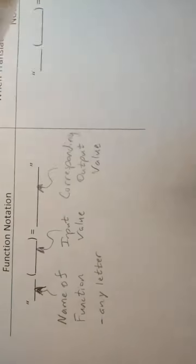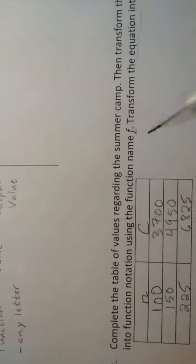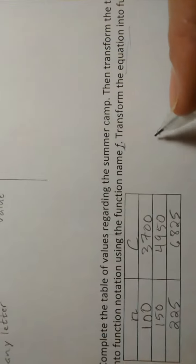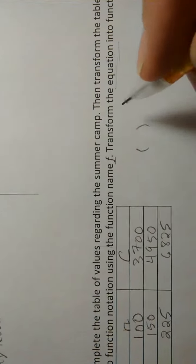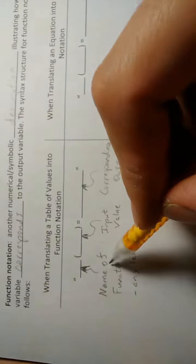So, what I'd like to do for you is translate this table of values into function notation here. And in our situation, we were given the function name F. So here's what we have. We have a set of parentheses and an equal sign. And what goes here is the function name. Function name for us was F. Remember, it can be any letter.